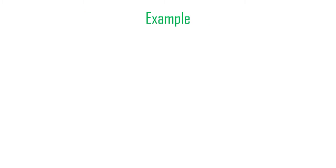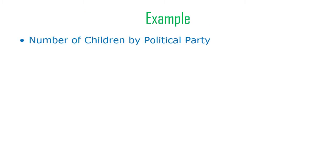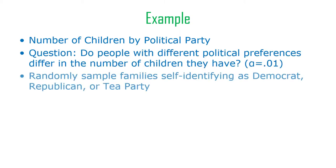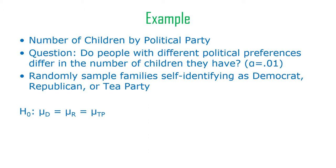Here's an example using some data. Let's say somebody is studying the number of children that people have by political party, and they do a pathetically small study. The research question is: do people with different political preferences have different numbers of children? They test it with alpha equals 0.01. They randomly sample a very small number of families from three different political backgrounds: Democrats, Republicans, and Tea Party people. The null hypothesis is that the mean number of children for all three groups is the same, and in our sample we should see something pretty similar if that's true in the population.